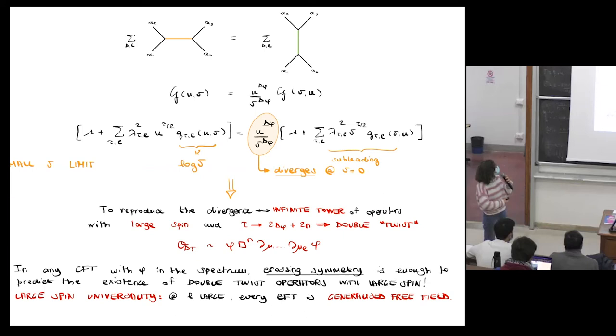But the conformal blocks, when we take the v limit, they just scale as log v. So just by studying this equation, one can predict the existence of an infinite tower of double trace operators at large spin, because just by summing these infinite operators we can indeed reproduce this divergence.